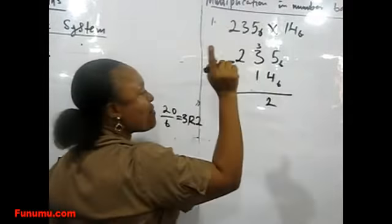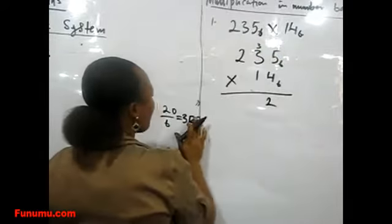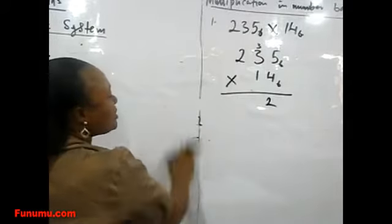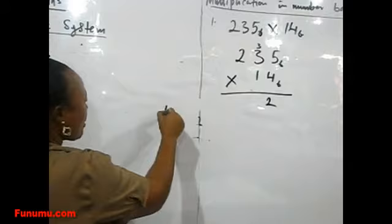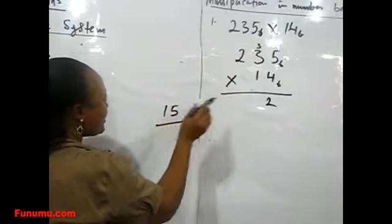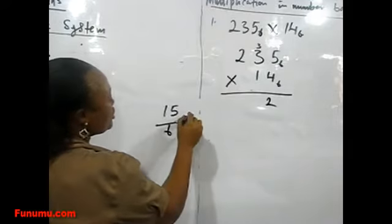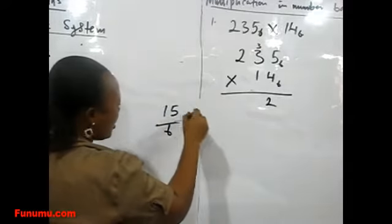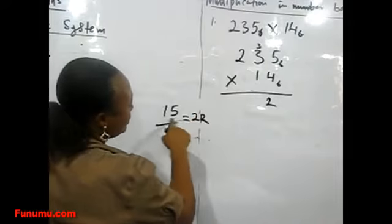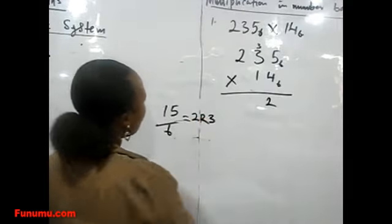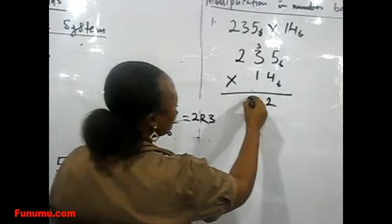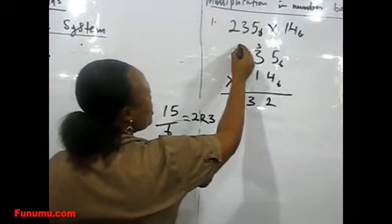We are carrying 3 to the next. So we have 3 to add here. Now 4 times 3 is 12, 12 plus 3 is 15. We divide by 6. 6 into 15 is 2, remainder 3.